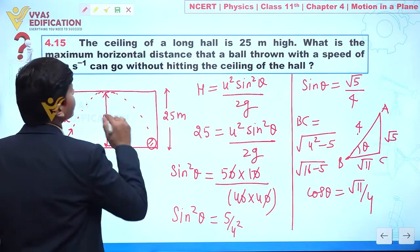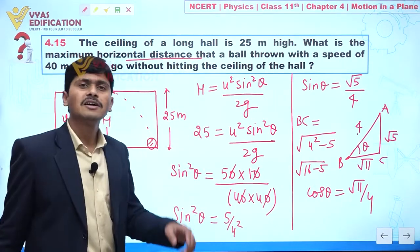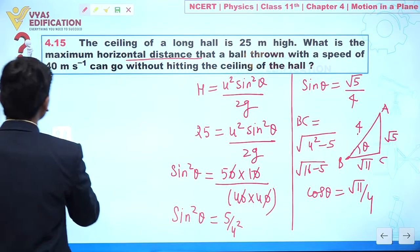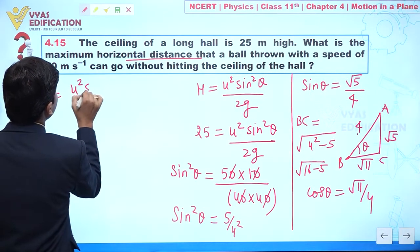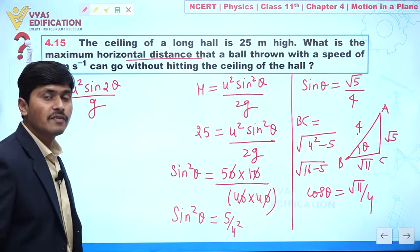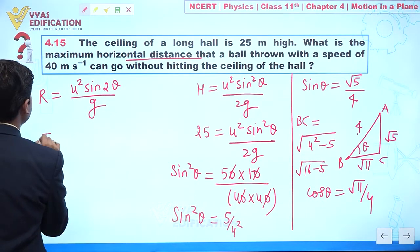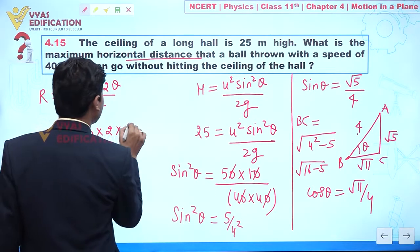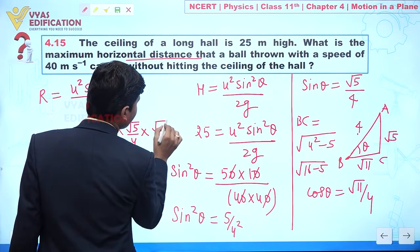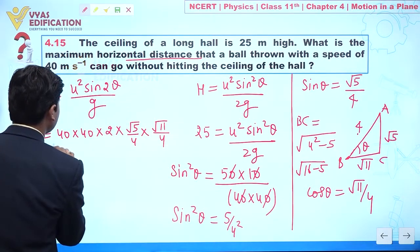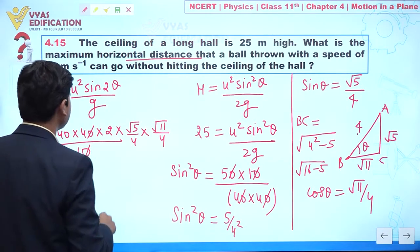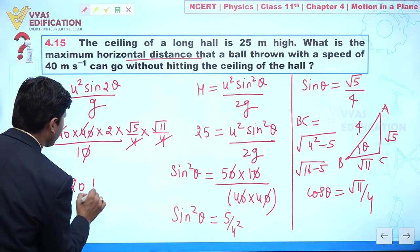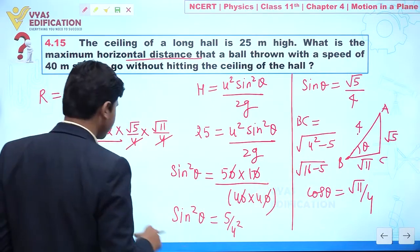Our objective is to find the maximum horizontal distance, which means we calculate the range. Range = u² sin 2θ / g = u² × 2 sin θ cos θ / g. Substituting: 40 × 40 × 2 × (√5/4) × (√11/4) / 10. The 4s cancel out, giving us 20√55.